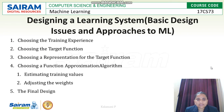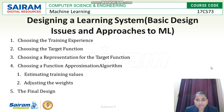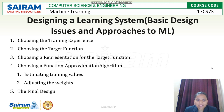Designing a learning system consists of five steps, which we otherwise call basic design issues and approaches to ML. The first step is choosing the training experience. That is the main thing, because based on the experience only, the performance is going to increase — the machine will learn based on the experience. So, choosing the training experience is the main first step.